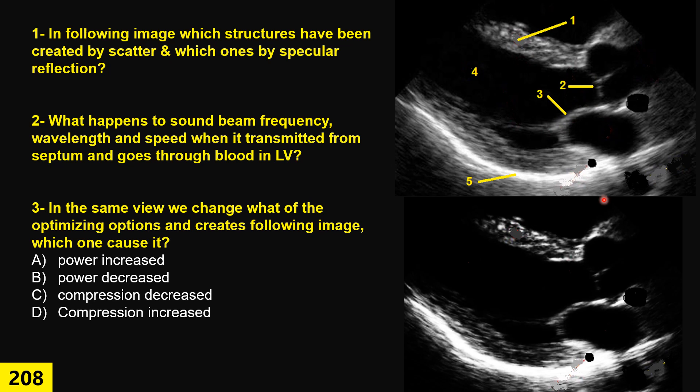Third question. The same case, we change one option for optimizing and it gives us this image. This is exactly that one. We change something and it creates this one. Which option for optimizing we change? We increased power, decreased power, decreased compression, or increased compression.